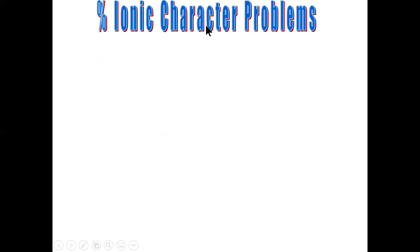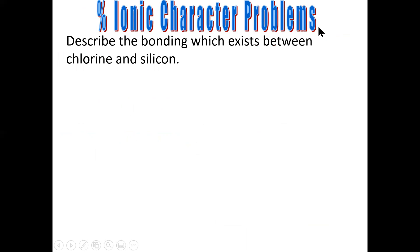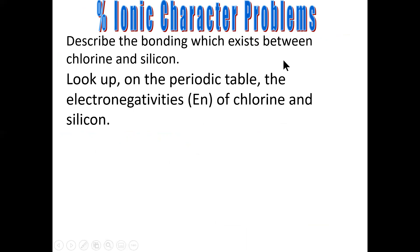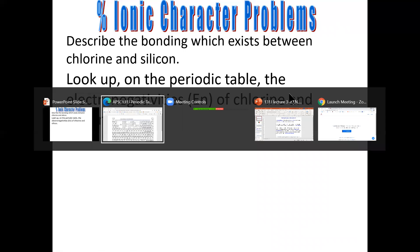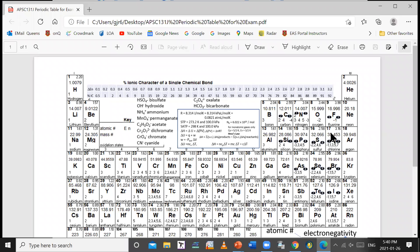I'm going to show you an example of percent ionic character problems that you'll be required to solve on your test next Tuesday. The question could say: describe the bonding which exists between chlorine and silicon. You're going to look up the electronegativities of chlorine and silicon on your periodic table. Chlorine has an electronegativity of 3.16. Silicon has an electronegativity of 1.90. There is also a chart showing the relationship between the difference in electronegativity and the percent ionic character of the bond.